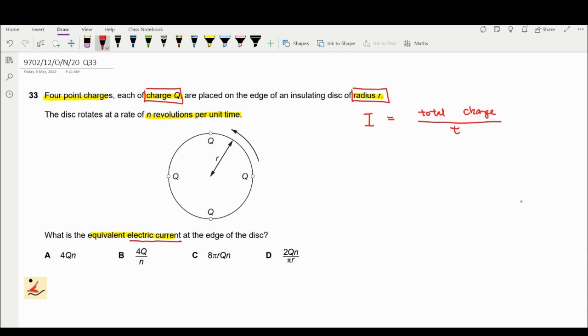Look at the situation again. For one rotation, let's take this as a starting point. Let your disk start rotating from this position. It rotates, passing through Q, the second Q, the third one, and then the fourth one.